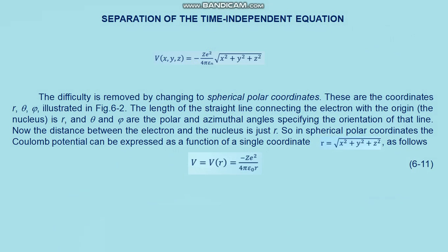Separation of the time-independent equation: the time-independent Schrödinger equation for the Coulomb potential can be solved by repeated applications of the technique of separation of variables, splitting the partial differential equation into a set of three ordinary differential equations each involving only one coordinate. However, separation of variables cannot be carried out in rectangular coordinates because the Coulomb potential energy is a function of all three coordinates x, y, z and cannot be split into terms each involving only one coordinate.